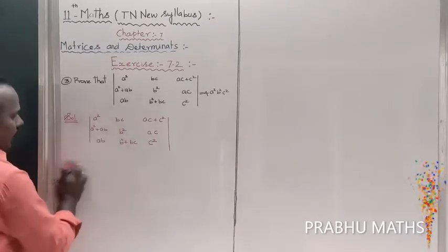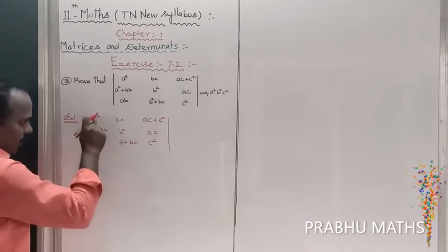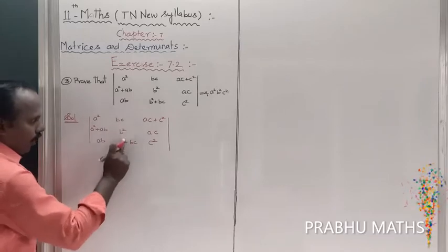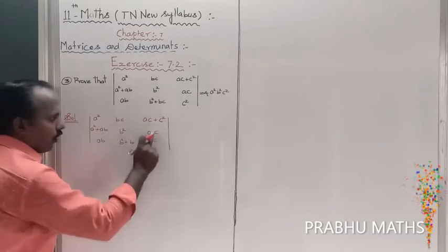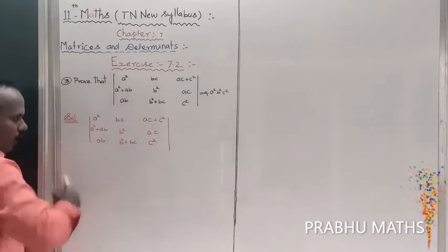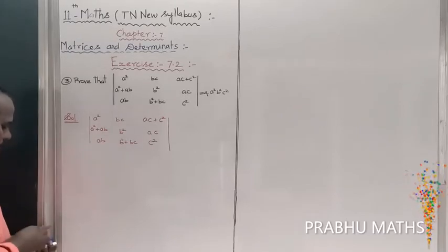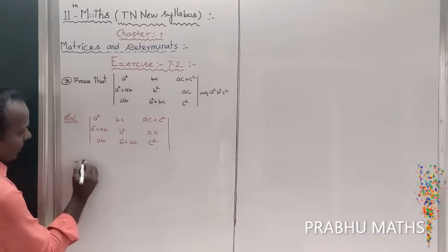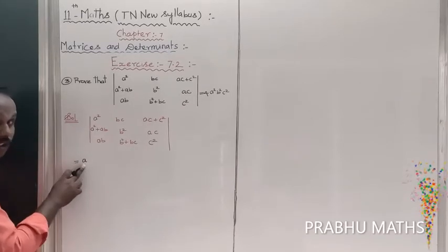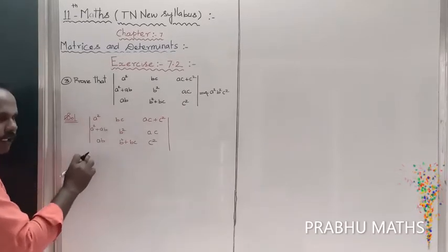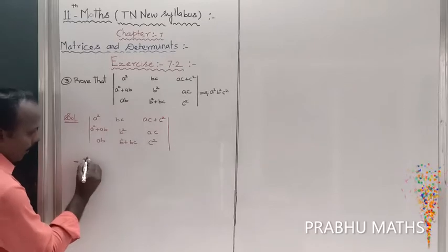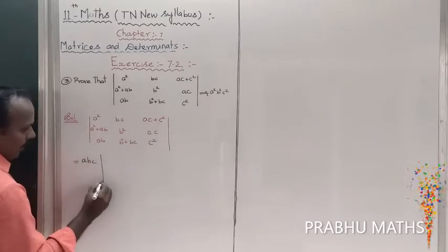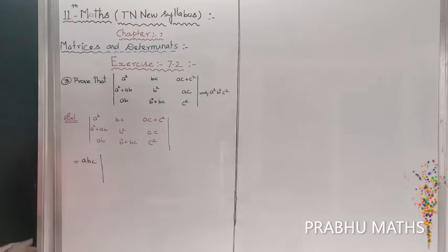From column C1, take the common value a. From column C2, take the common value b. From column C3, take the common value c. So we take abc outside as the common factor, leaving the remaining determinant values inside.